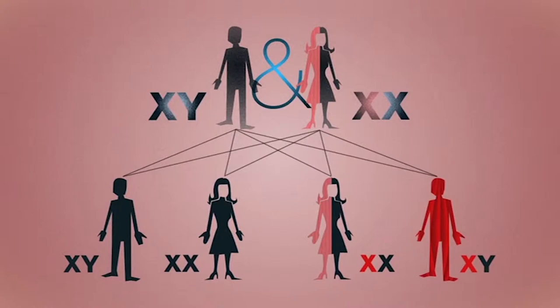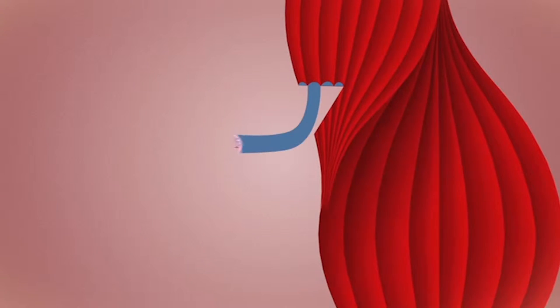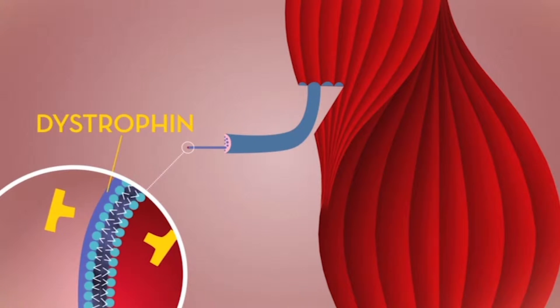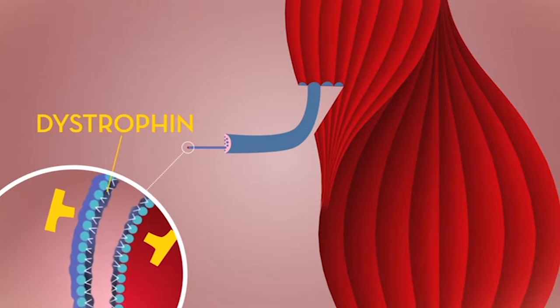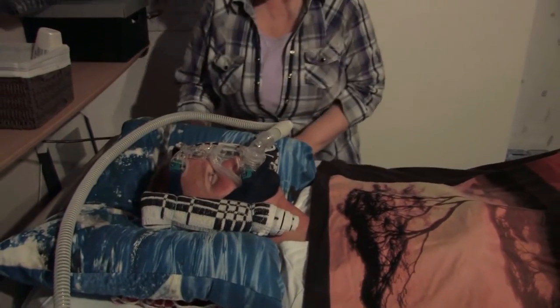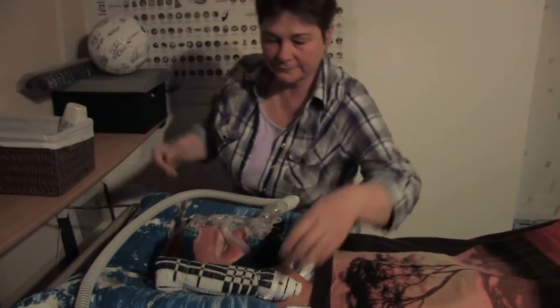Duchenne patients cannot make the protein dystrophin, and dystrophin normally provides stability to muscles when you use them. Because in Duchenne patients this protein is missing, the muscles are very sensitive to damage. There's muscle damage whenever these patients use their muscle, and eventually they lose their muscle tissue and therefore also their muscle function.